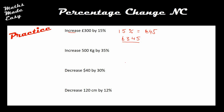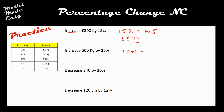Quantities don't have to be in pounds — here we've got 500 kilograms that needs to be increased by 35%. Working out the five key percentages in the background, 35% is 175 kilograms, and because this is an increase I add it on to give a total of 675 kilograms.